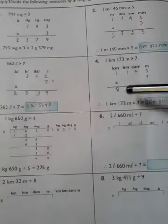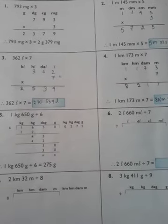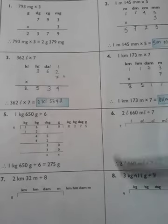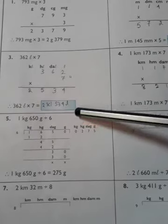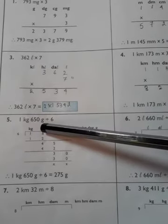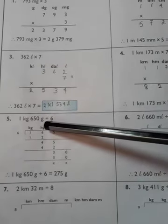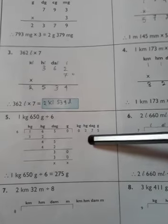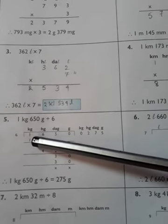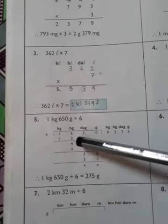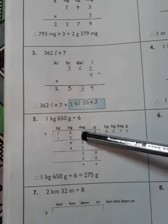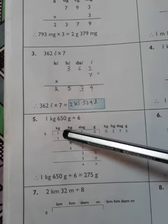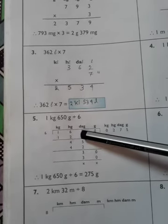I have completed the math problems up to here. Now let's do the next one. The problem is: 1 kg 650 g divided by 6. So, 1 kg 650 g — that is 1 kg, 6 hectograms, 5 dekagrams, 0 grams.